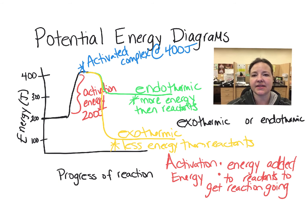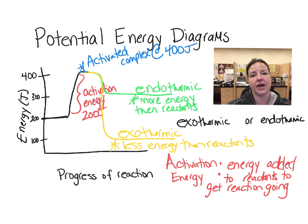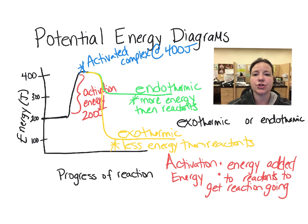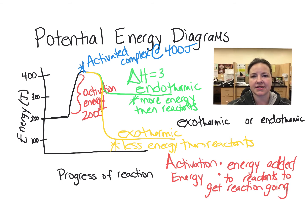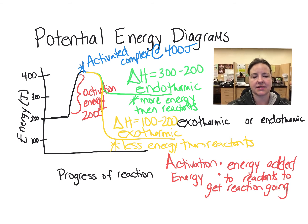If energy is gained, then it is an endothermic reaction — energy goes in and our products have more energy at the end than our reactants did at the beginning. In addition to that, you should be able to calculate the enthalpy of the reaction by taking the energy of the products and subtracting the energy of the reactants.